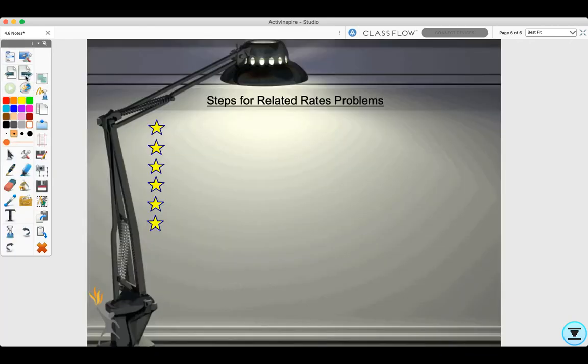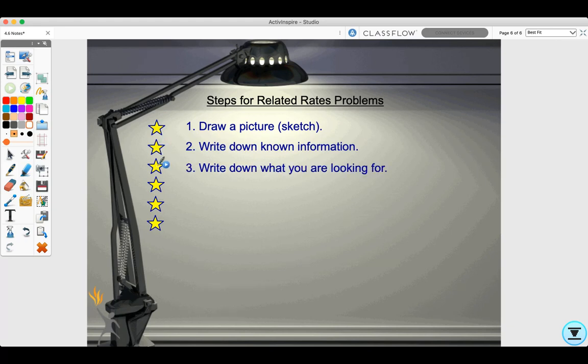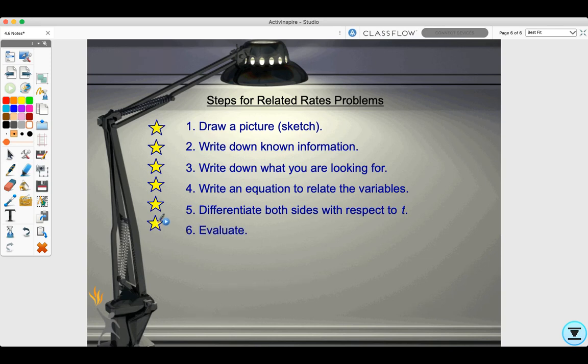Let's review the steps for related rates problems. Step one: Draw a picture or sketch if you can. Step two: Write down known information. Step three: Write down what you're looking for and label it with a question mark. Step four: Write an equation to relate the variables. Step five: Differentiate both sides with respect to t and evaluate to find your answer.